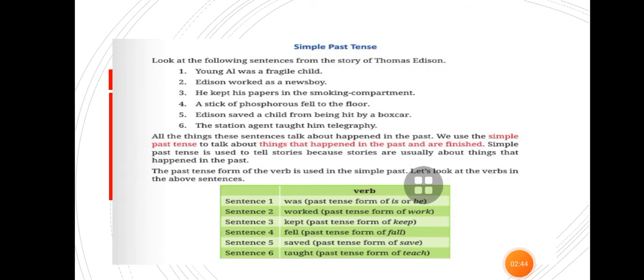Now, simple past tense is given here. What is simple past tense? Look at the following sentences from the story of Thomas Edison. Young L was a fragile child. Edison worked as a newsboy. He kept his paper in the smoking compartment. A stick of phosphorus fell on the floor. Edison saved a child from being hit by a boxcar. The station agent taught him telegraphy. All the things these sentences talk about happened in the past. We use the simple past tense to talk about things that happened in the past and are finished. Simple past tense is used to tell stories because stories are usually about things that happened in the past.